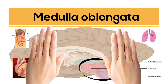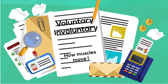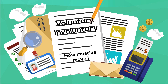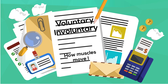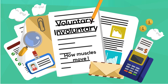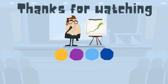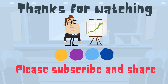So in summary, muscles we can control are voluntary and our automatic muscles are involuntary muscles. Thanks for watching. MooMooMath uploads a new math and science video every day. Please subscribe and share.